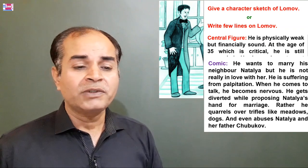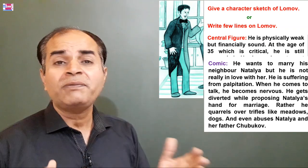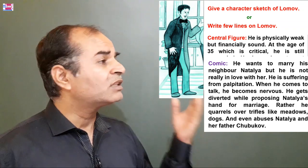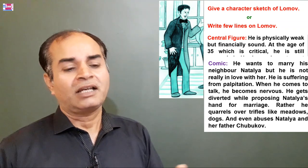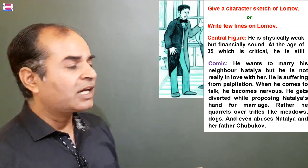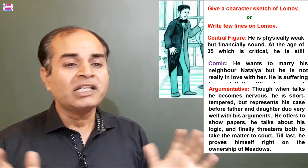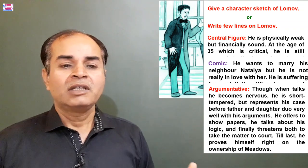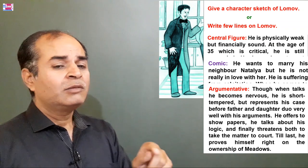He gets diverted while proposing Natalia's hand for marriage. Rather than proposing, he quarrels over trifles like meadows and dogs, and even abuses Natalia and her father. This creates a comic situation. He is argumentative — when he talks he becomes nervous, but he is also short-tempered.